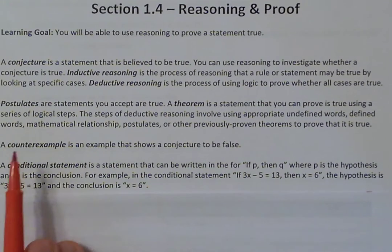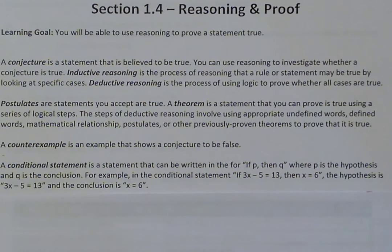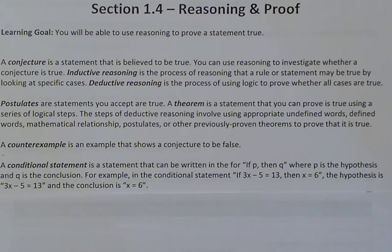A counterexample is an example that shows a conjecture to be false. A counterexample to my October conjecture would be finding just one October where it's not rainy and cold. Another example: if I had a conjecture that every time you add two numbers you get an even result — two plus two is four, even. But one plus two is three, which is not even, so that's a counterexample.